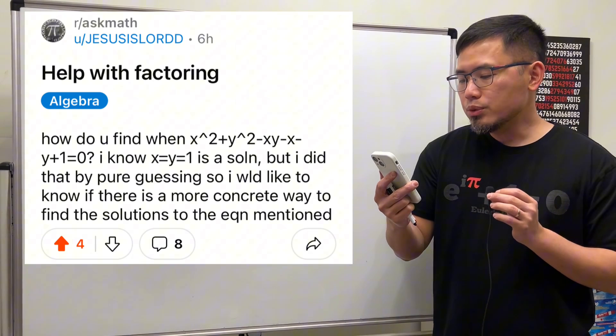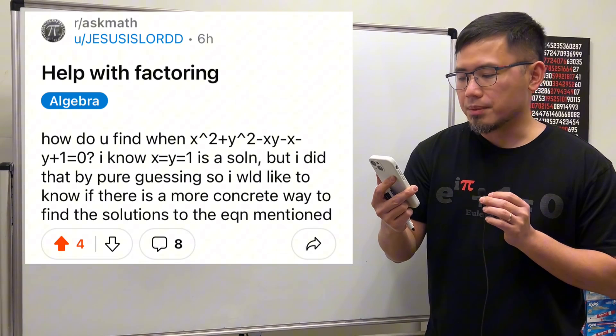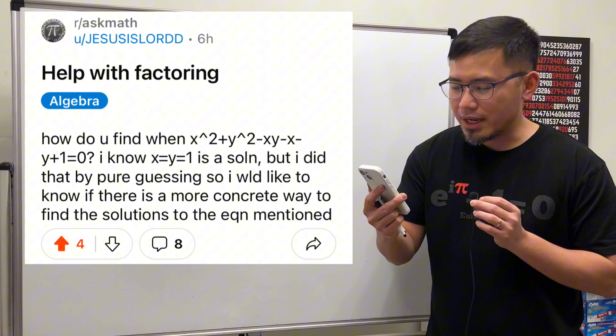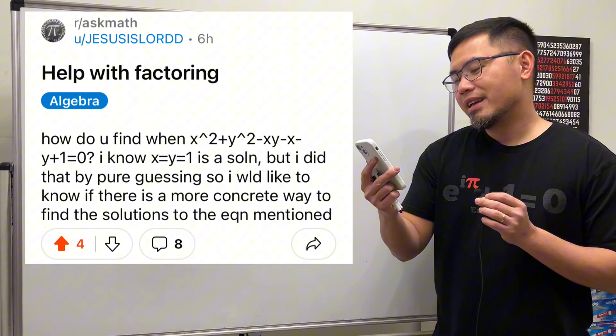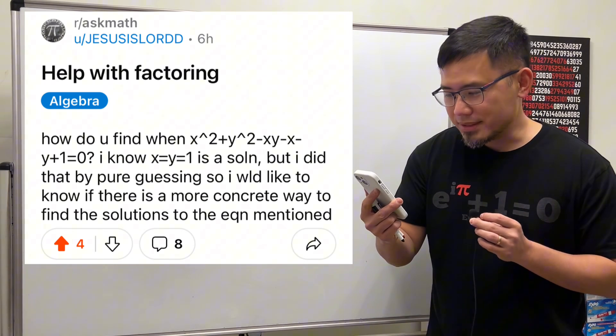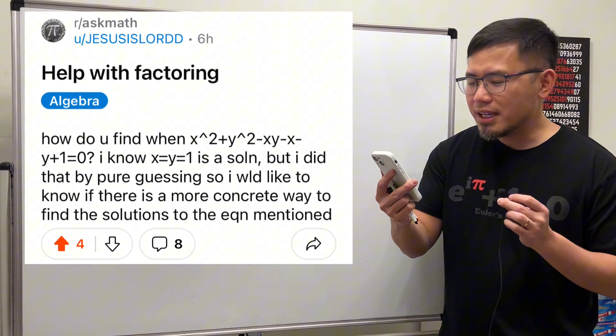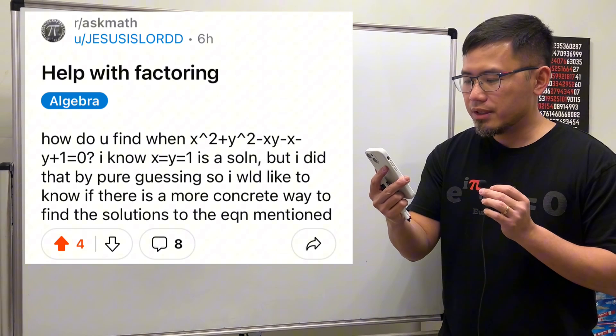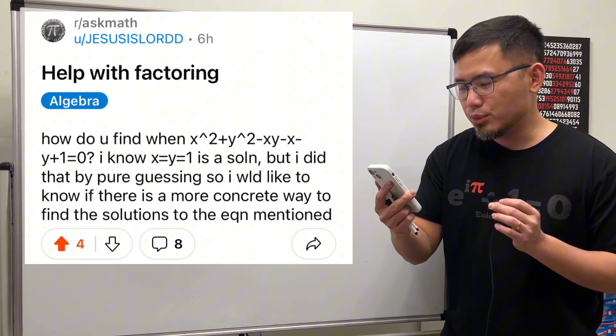Help with factoring: how do you find when x squared plus y squared minus xy minus x minus y plus one equals zero? I know x equals y equals one is a solution, but I did that by purely guessing and I would like to know if there is a more concrete way to find the solutions to the equation mentioned.